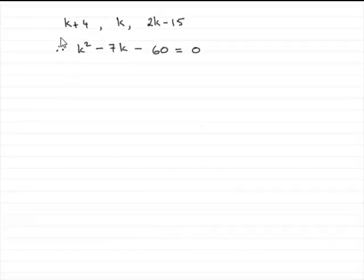Hi. Now, in the first part, when we had the geometric series with the first three terms k plus 4, k, 2k minus 15, we showed that k squared minus 7k minus 60 equals 0.